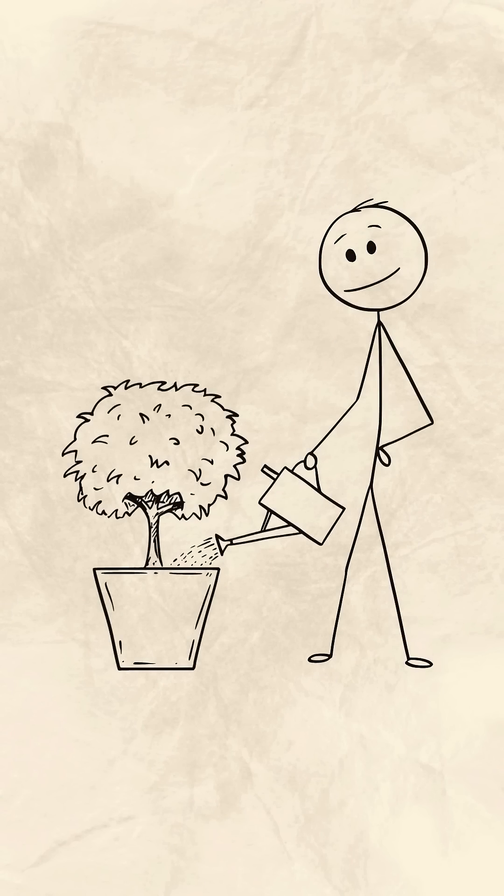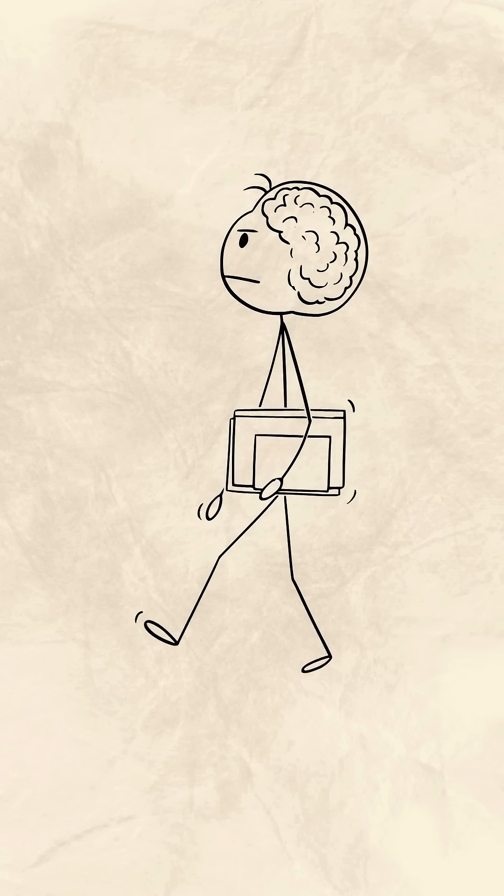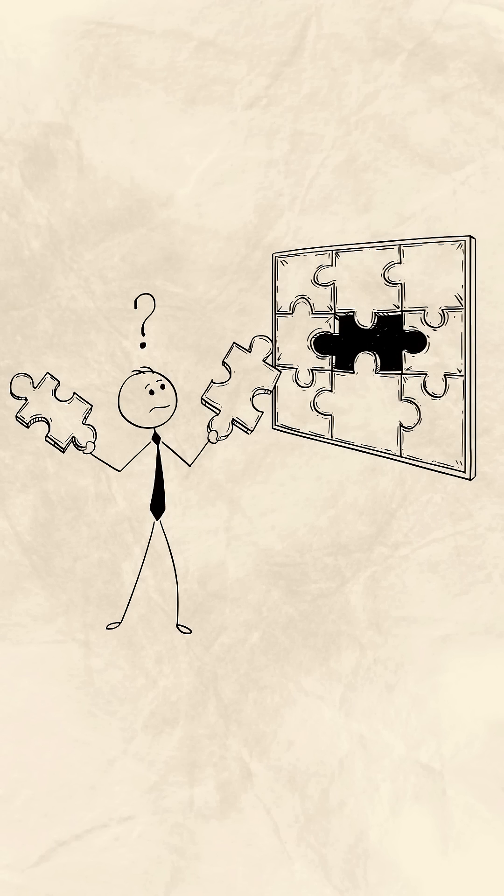They joke about drinking water straight from the garden hose, about being half wild, half civilized. But beneath the humor is something deeper. That environment didn't just create memories, it shaped their brains in lasting ways. The first trait psychologists often point to is self-directed problem solving.